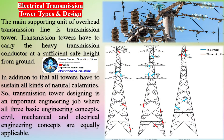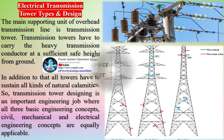The main supporting unit of an overhead transmission line is the transmission tower. Transmission towers have to carry the heavy transmission conductor at a sufficient safe height from the ground. In addition, all towers have to sustain all kinds of natural calamities.